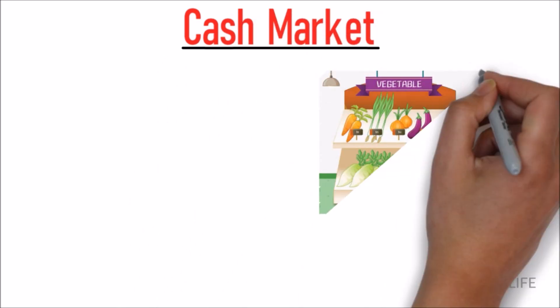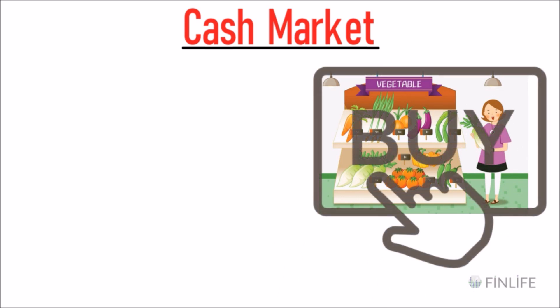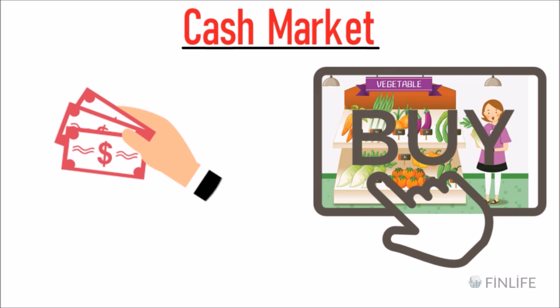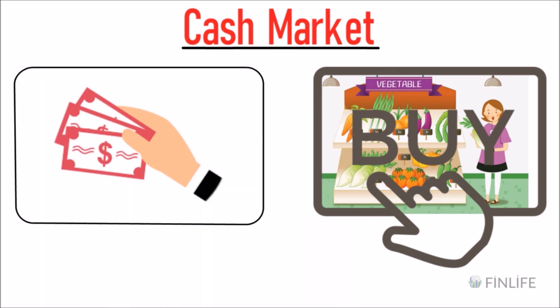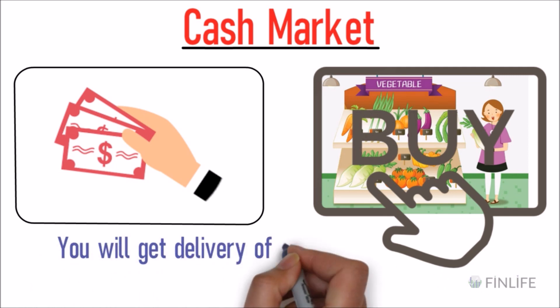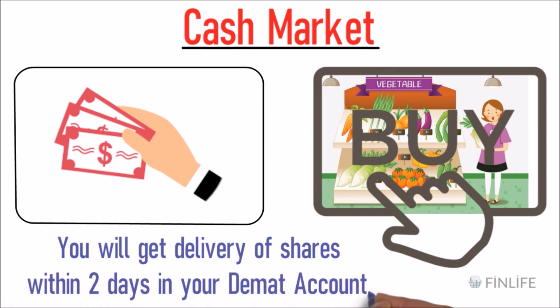First, a brief overview of cash markets. Cash markets are just like buying vegetables — if you want to buy a stock you just pay the money. For example, if you pay 100 rupees, you will receive the delivery of shares within two days in your DMAT account. You give the money and receive the stocks within a stipulated period of time.